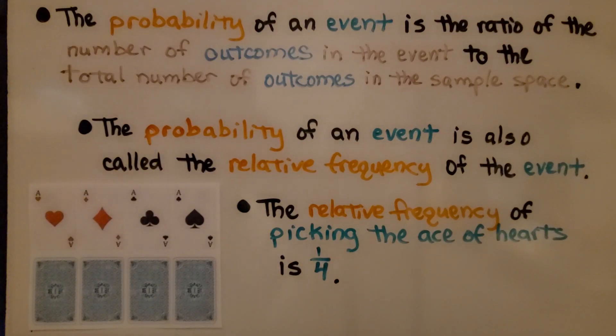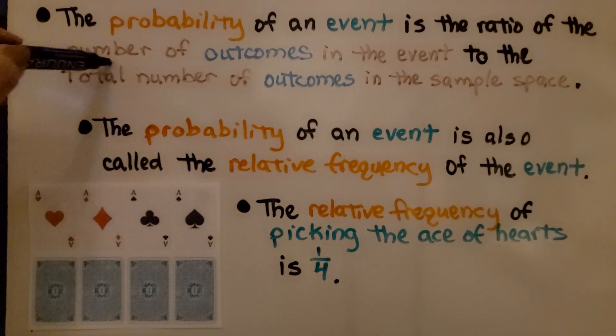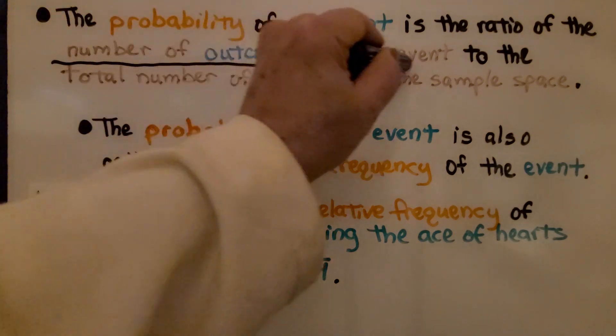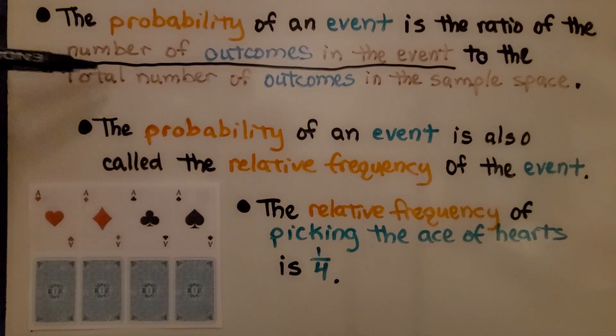We've learned the probability of an event is the ratio of the number of outcomes in the event to the total number of outcomes in the sample space. The probability of an event is also called the relative frequency of the event. So the relative frequency of picking an ace of hearts would be one-fourth. There's four cards, there's one ace of hearts, so it would be one-fourth.